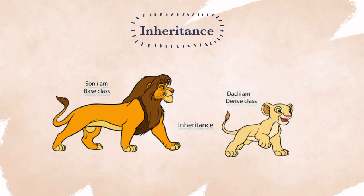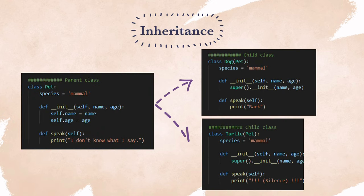The next principle is inheritance. Inheritance is a mechanism in which one class acquires the property of another class. For example, a child inherits the traits of his or her parents. With inheritance, we can reuse the attributes and methods of the existing class to create a new object, and therefore inheritance can make your code more reusable.